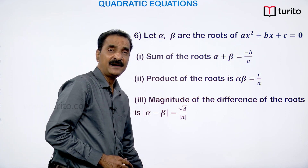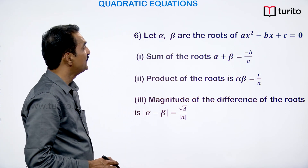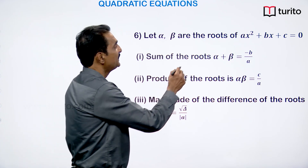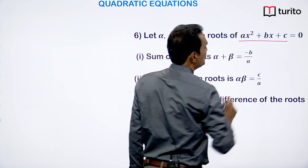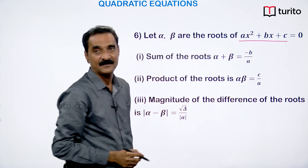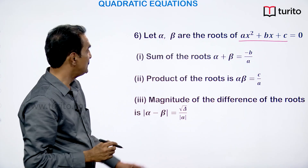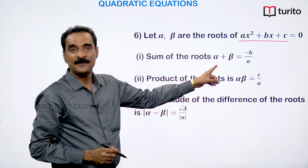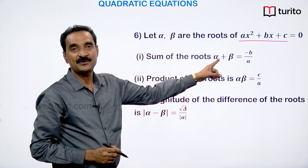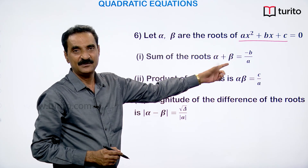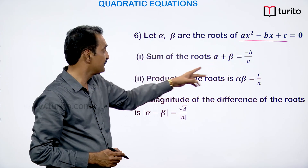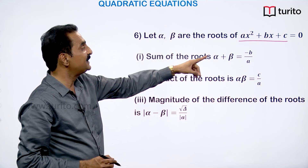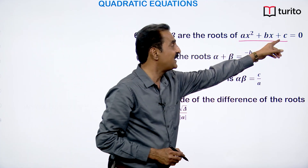Let α and β be the roots of ax² + bx + c = 0. Then the sum of the roots is α + β = −b/a, and the product of the roots is αβ = c/a.